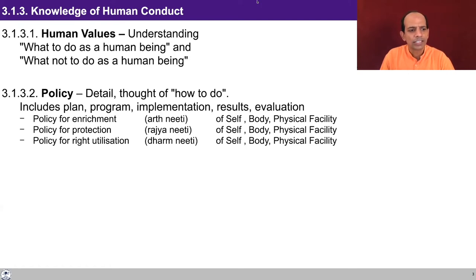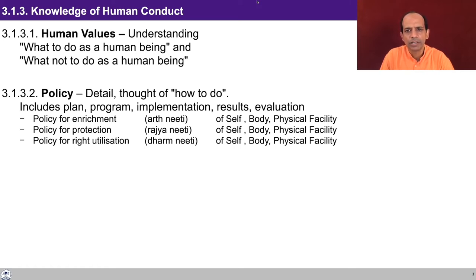There are three kinds of policies: policy for enrichment (called arthaniti in Hindi), policy for protection (called rajniti), and policy for right utilization (called dharmaniti). These are applied to three assets: the self, the body, and physical facility — covering how to enrich, protect, and rightly utilize these assets.